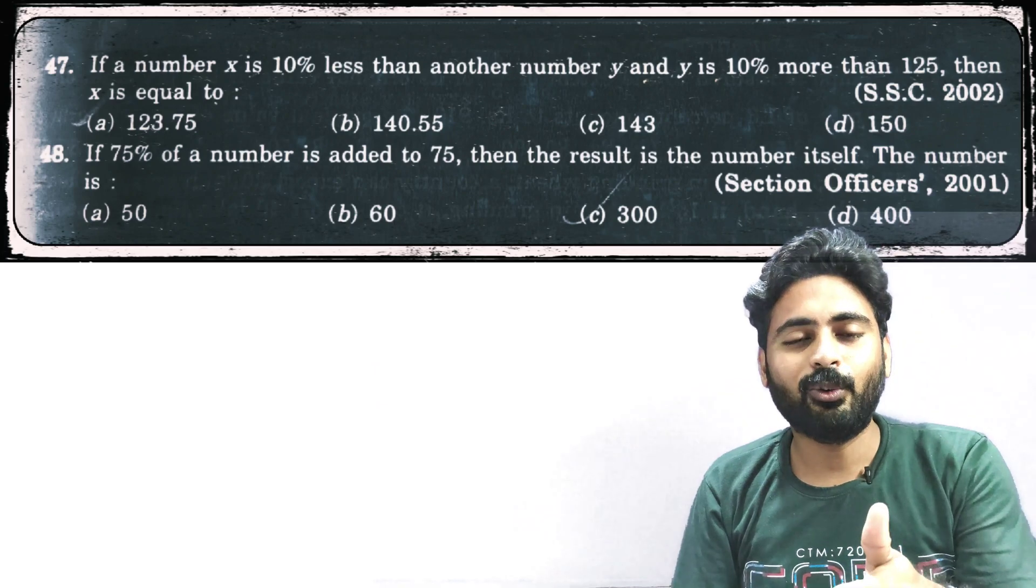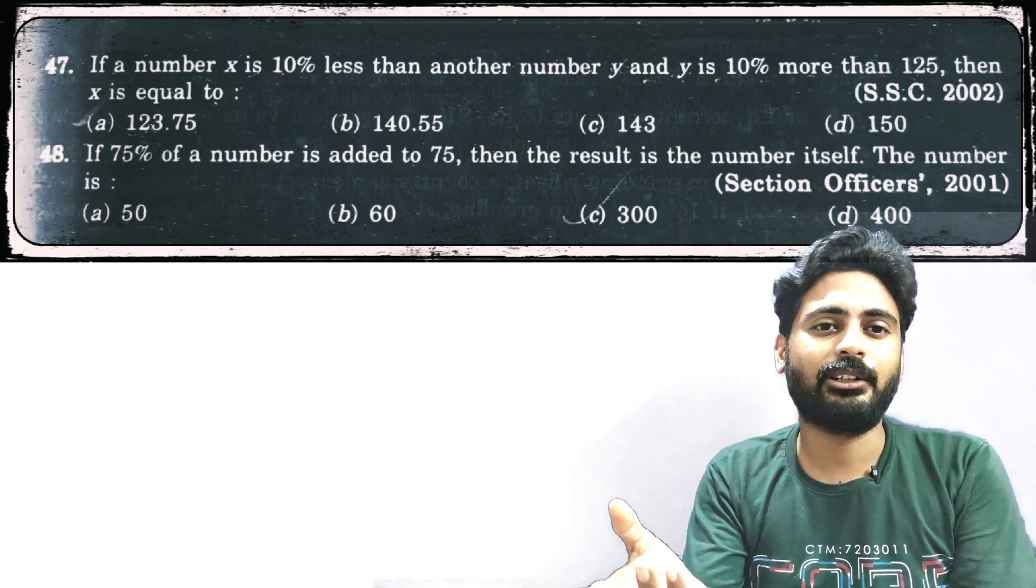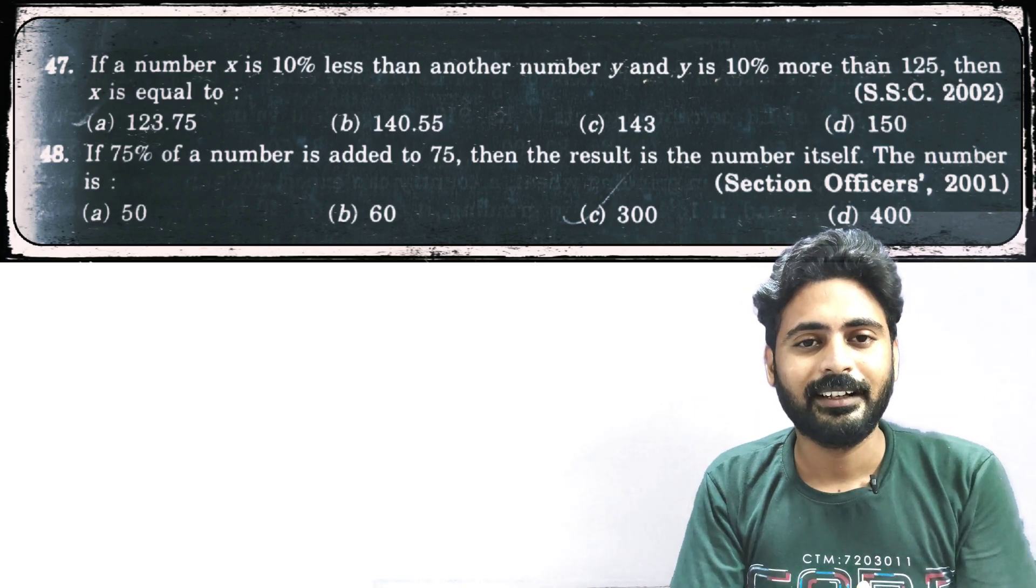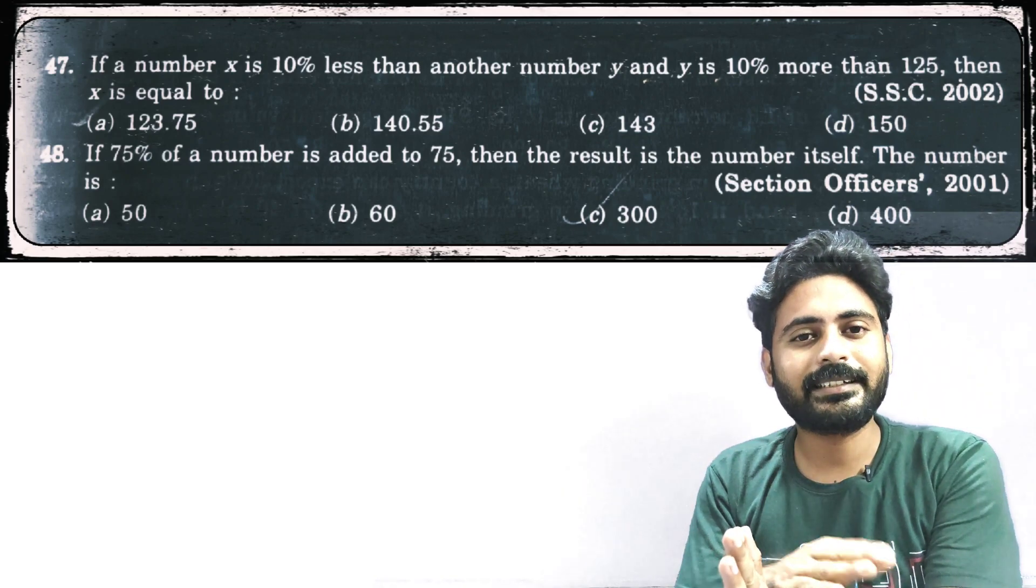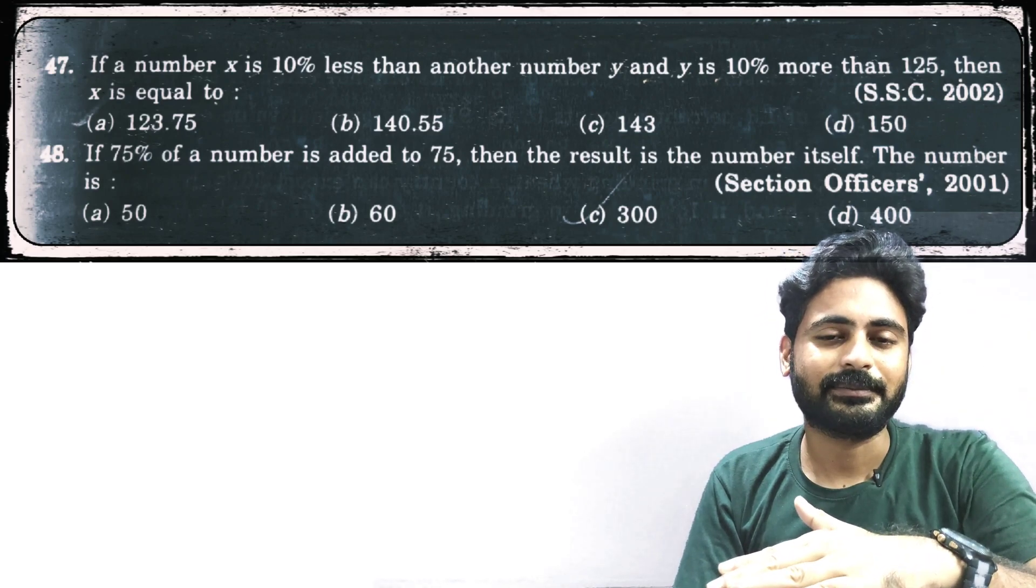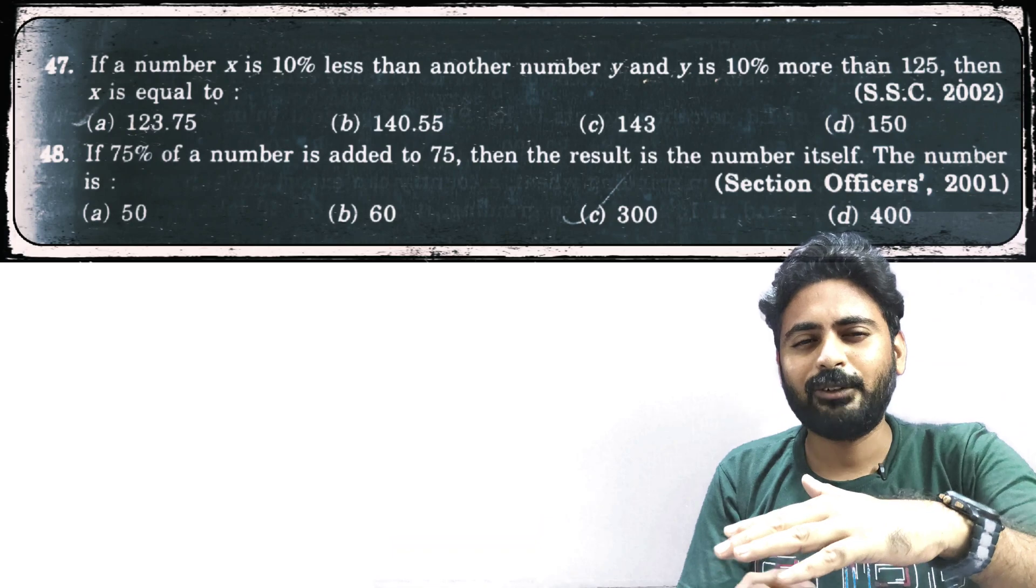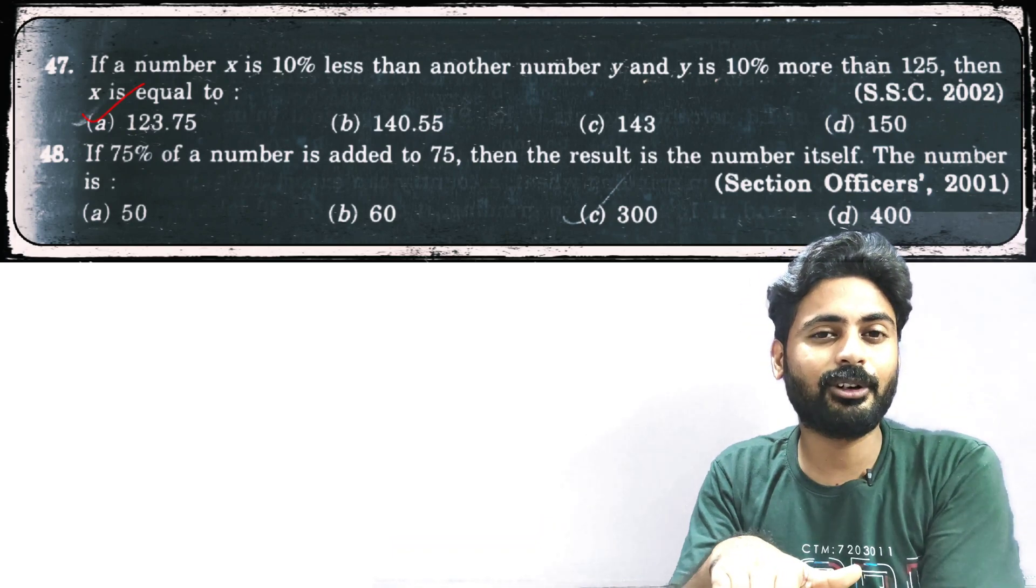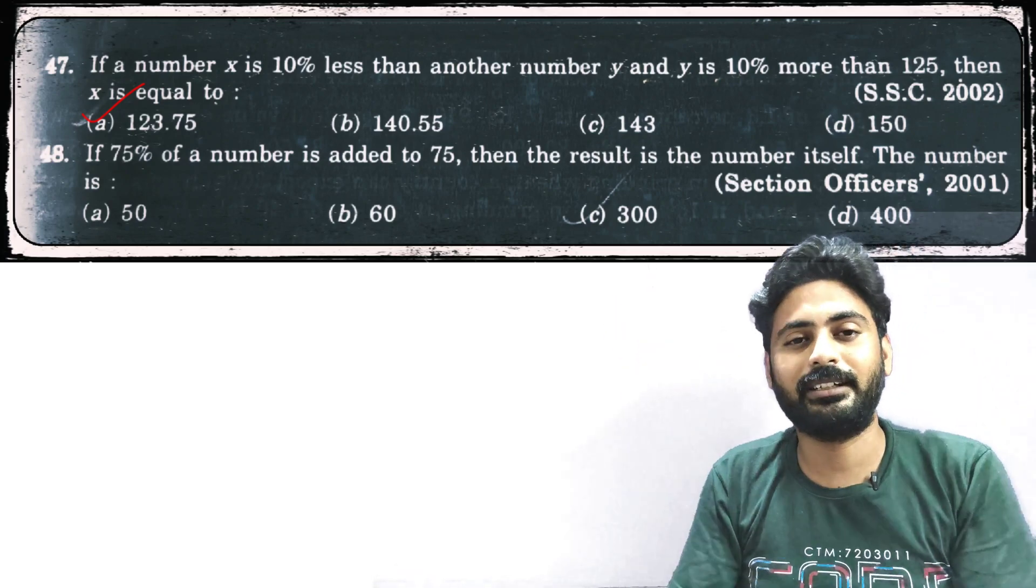So what is the value of y ideally? It's 10% more than 125, which means somewhere close to 137, correct? Now x is 10% less than y, which means it would be somewhere around 123. And the options are 123, 140, 143, and 150 - higher numbers.